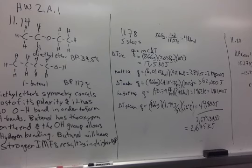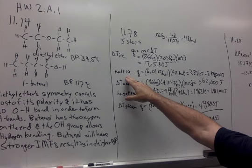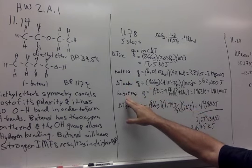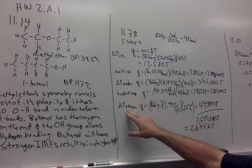So that will be five steps because first we have to raise the temperature of the ice, then we have to melt the ice, raise the temperature of the water, vaporize the water, and then raise the temperature of the steam. Some of these numbers are in the problem, but others you have to look up in the book.